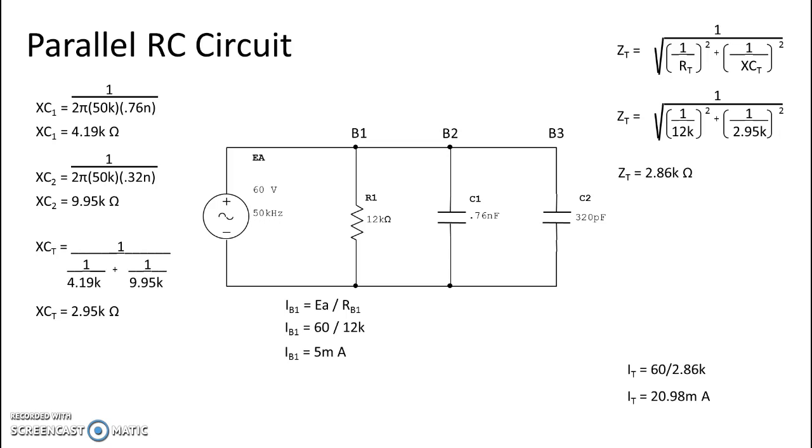For branch two we take voltage divided by the ohmic value of C1, which was 4.19k ohms, and that gives us a current of 14.32 milliamps.